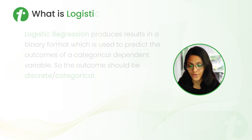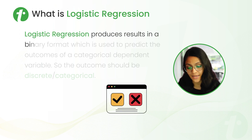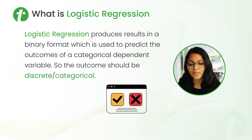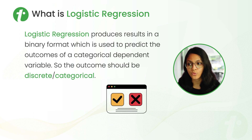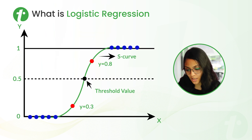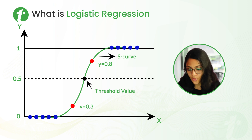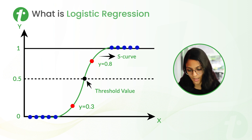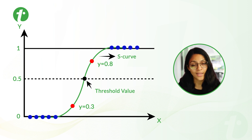Now let's understand what is Logistic Regression. From definition, Logistic Regression produces results in a binary format which is used to predict the outcomes of categorical dependent variables. The outcome should be discrete or categorical. We use Logistic Regression where we need to classify a group or we have only binary outcomes like yes/no, true/false, whether it is going to happen or not. You can observe the S-curve of Logistic Regression on the screen. We have probability on the Y-axis and the event on the X-axis. There is a threshold value — if the value is less than the threshold, the probability is 0 and the event is not going to happen; if greater, the event is going to happen.